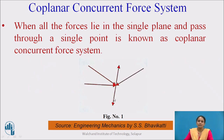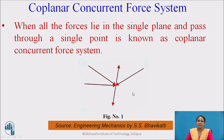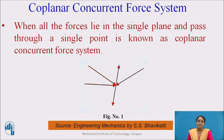If you observe this figure, all these forces are passing through a same point and in a same plane. When all the forces lie in a single plane and pass through a single point, this is known as a coplanar concurrent force system.